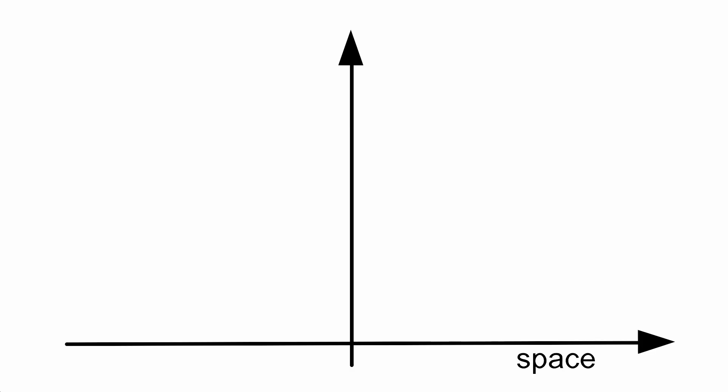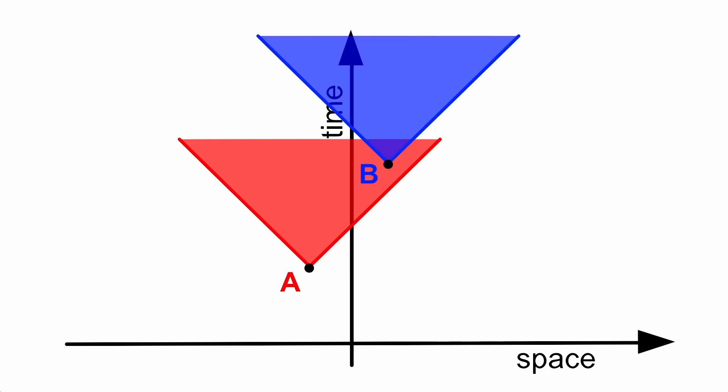So if we draw space on the vertical and time on the horizontal axis, and as usual say that light travels at a 45 degree angle, then for A to be the cause of B, the event B must be in this area.